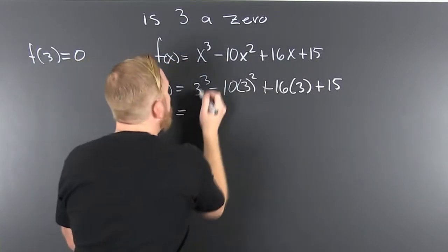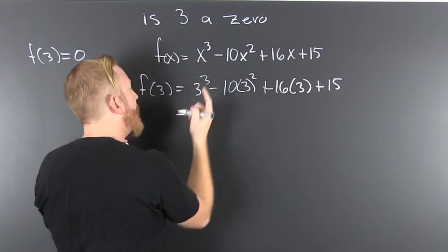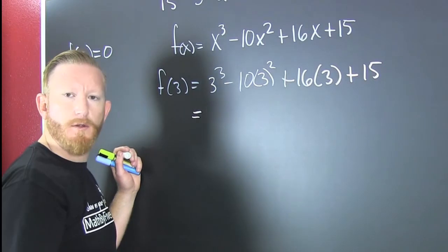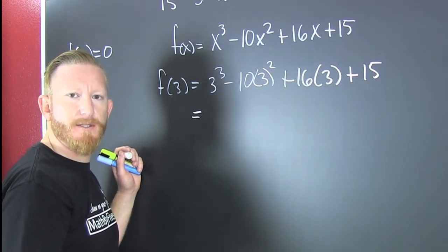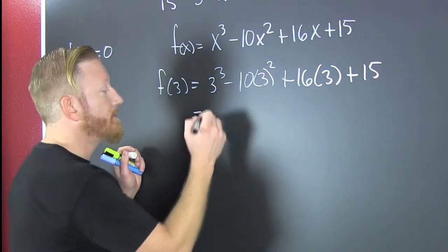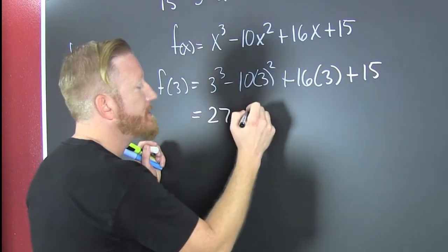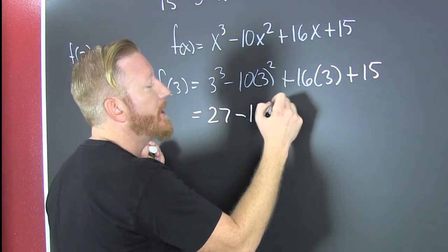Alright, so that's 3 to the 3rd. 3 times 3 is 9 times 3 is 27. 27 minus 10 times 3 squared is 9.